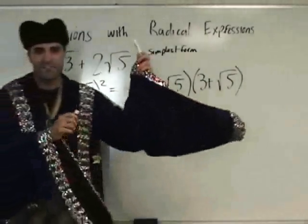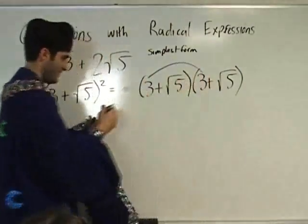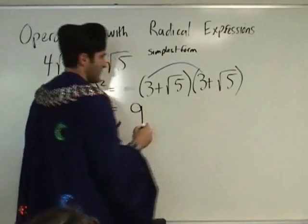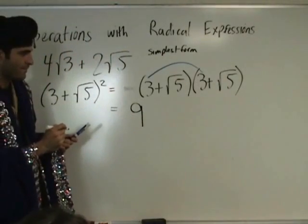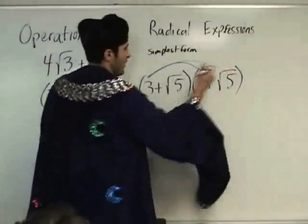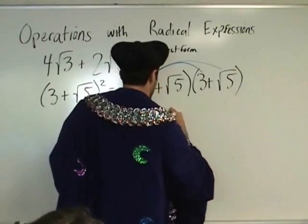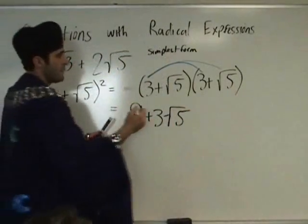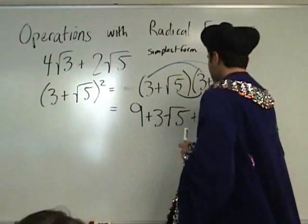Foil. Nine. Plus three square root of five. Three square root of five. Plus three square root of five. Plus square root of twenty-five.